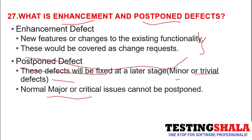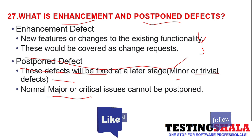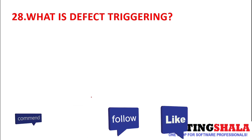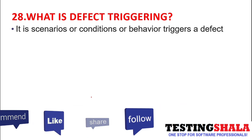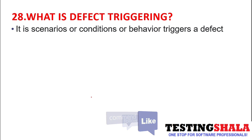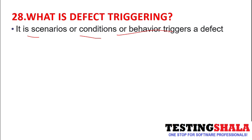What is defect triggering? Defect triggering is a scenario, condition, or behavior which triggers a defect. A particular defect can only be reproduced when a particular scenario has been executed, a particular condition has been met, or a particular behavior of the application has occurred — that is when a defect gets triggered.